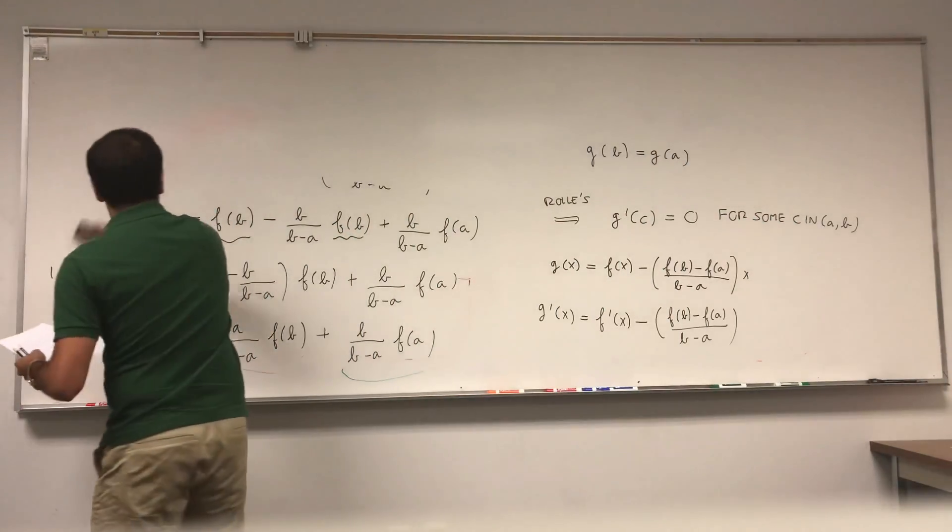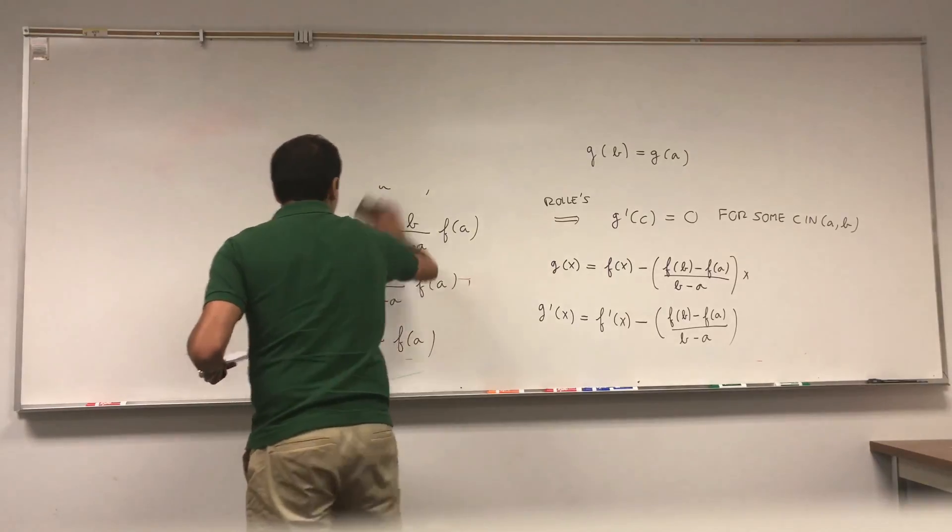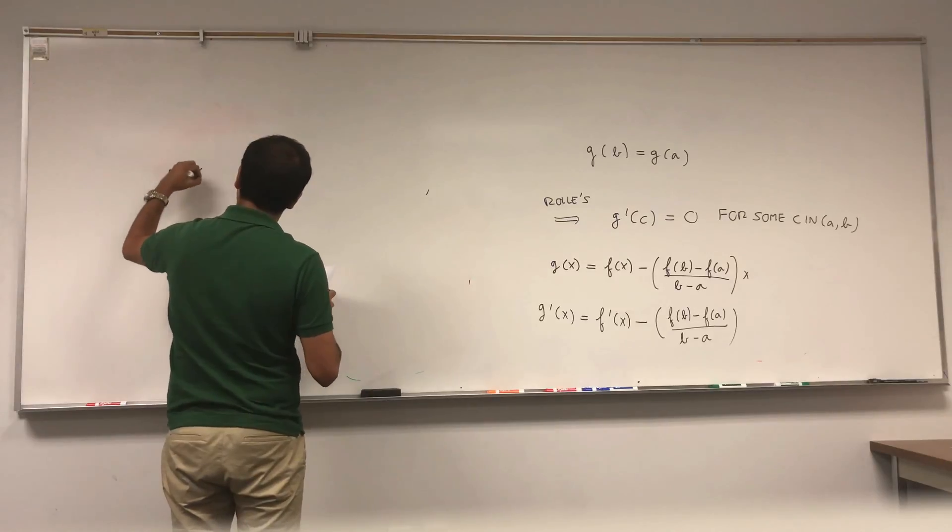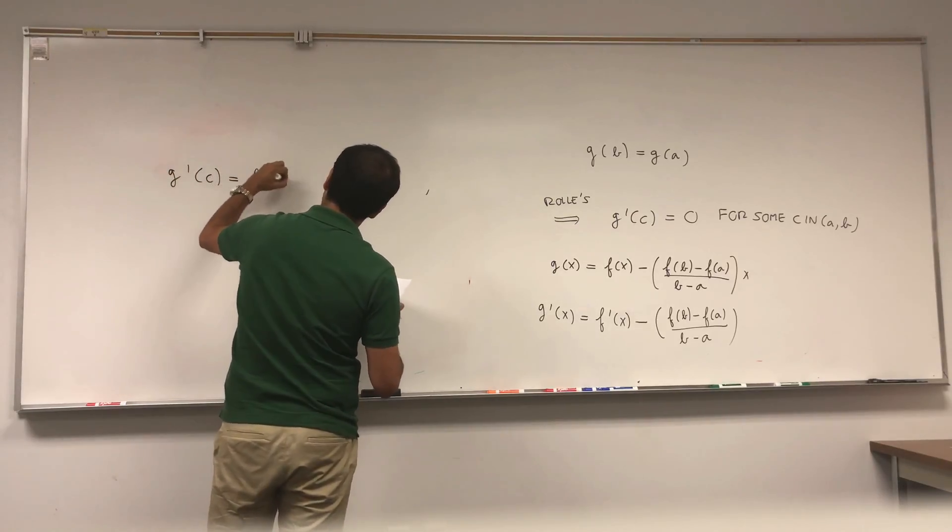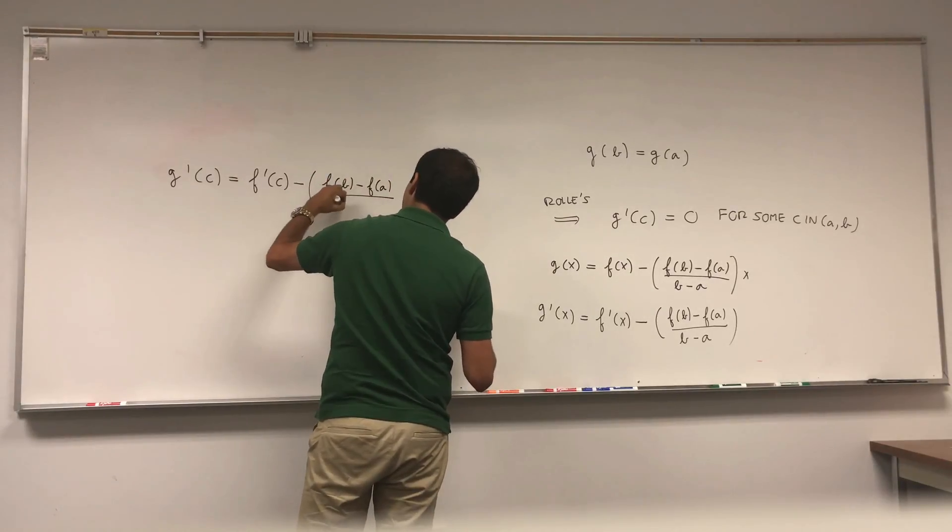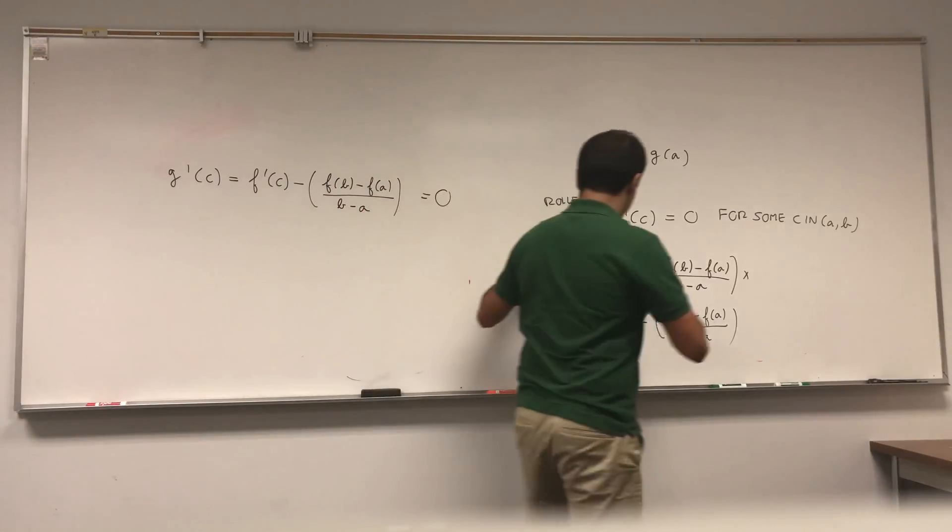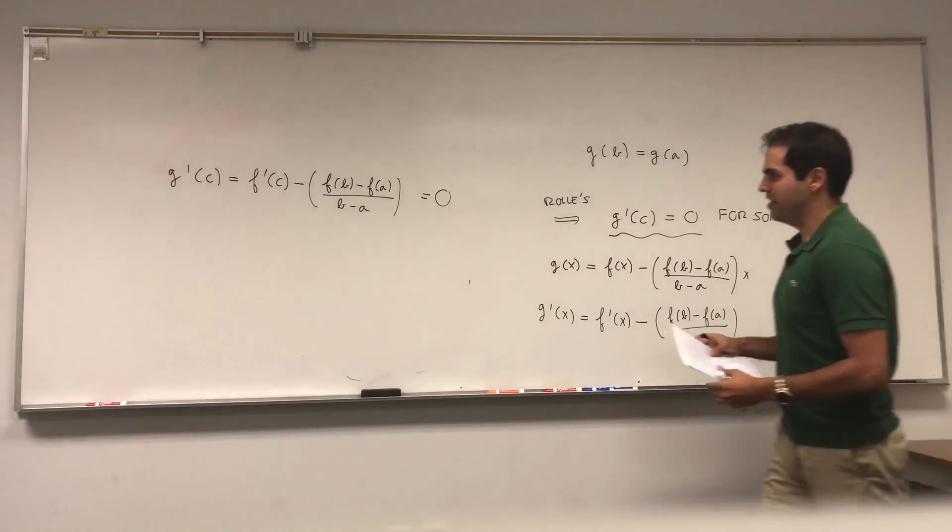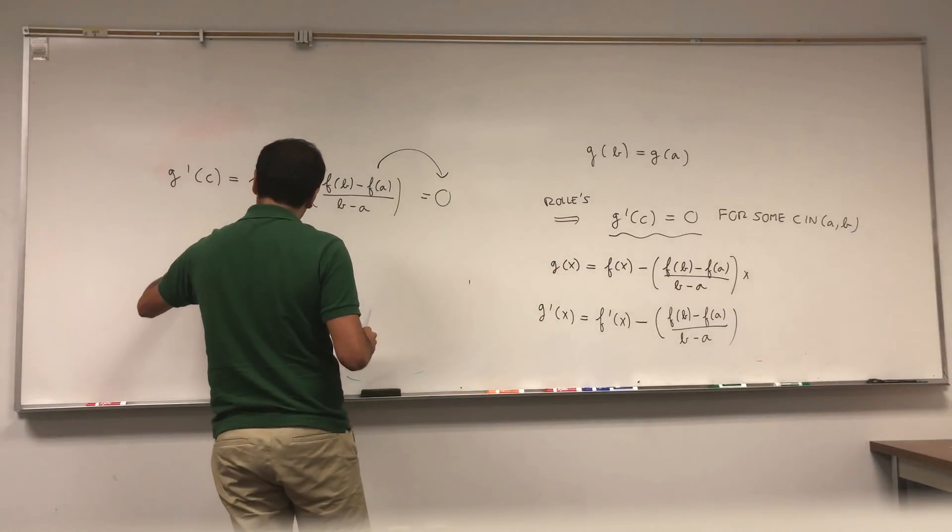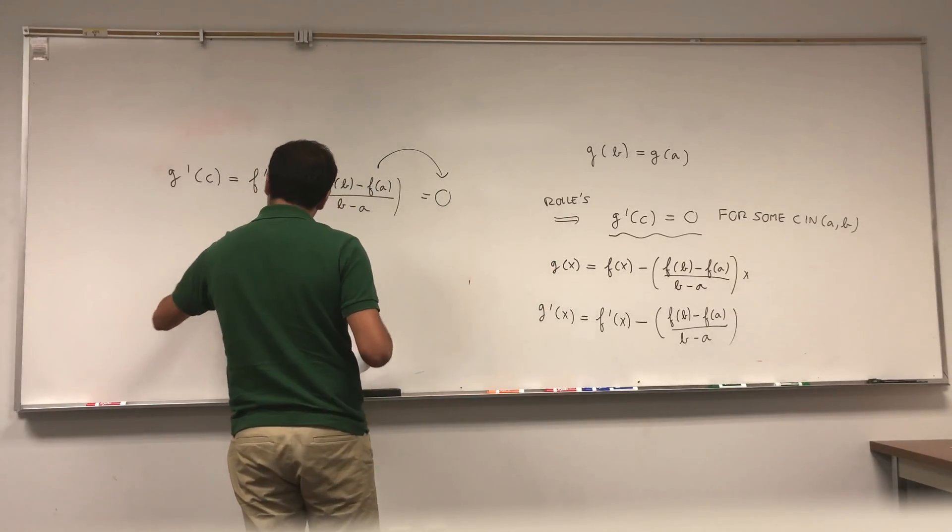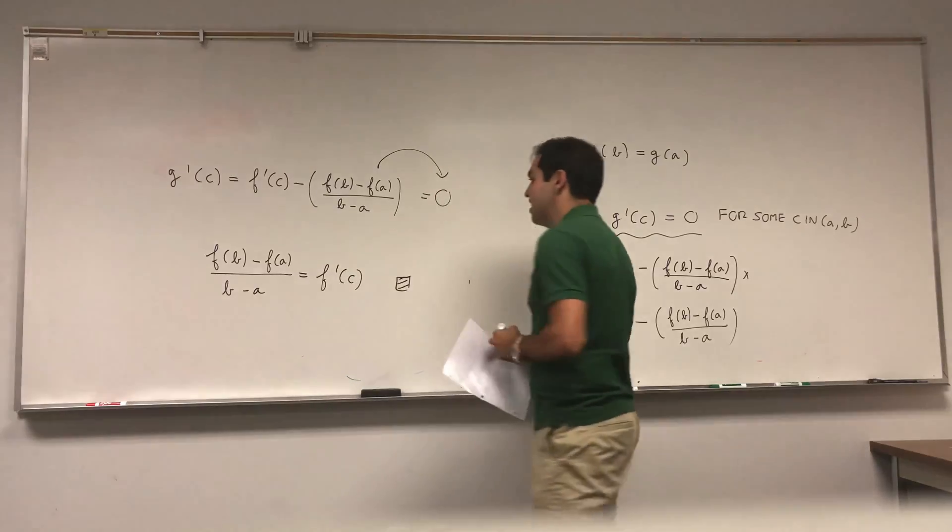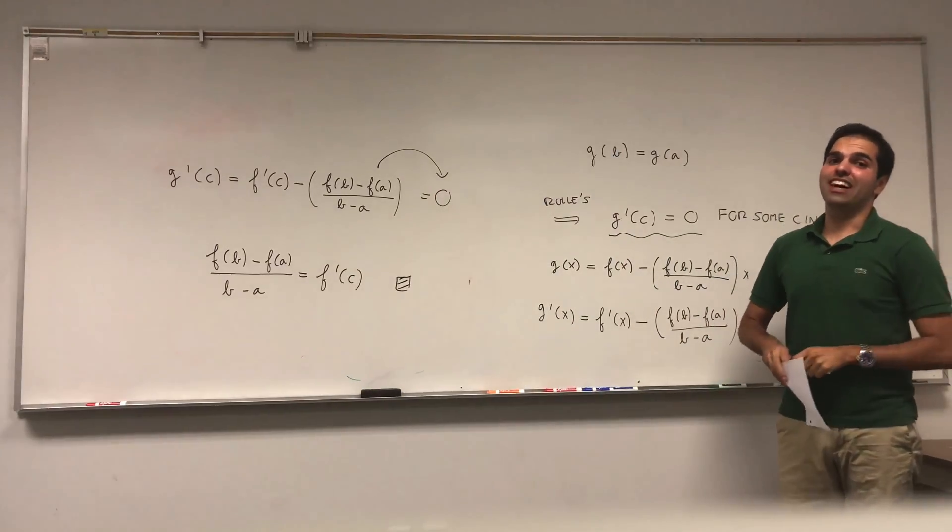And in particular, plugging in c, you have that g prime of c equals f prime of c minus f(b) minus f(a) over b minus a. On the other hand, you know that it equals zero by this property, so if you put that on the right-hand side, you get f(b) minus f(a) over b minus a equals f prime of c, which is exactly the statement of the mean value theorem.